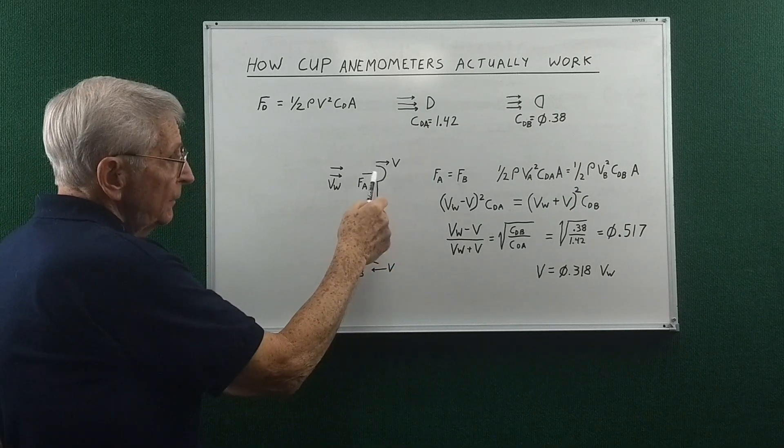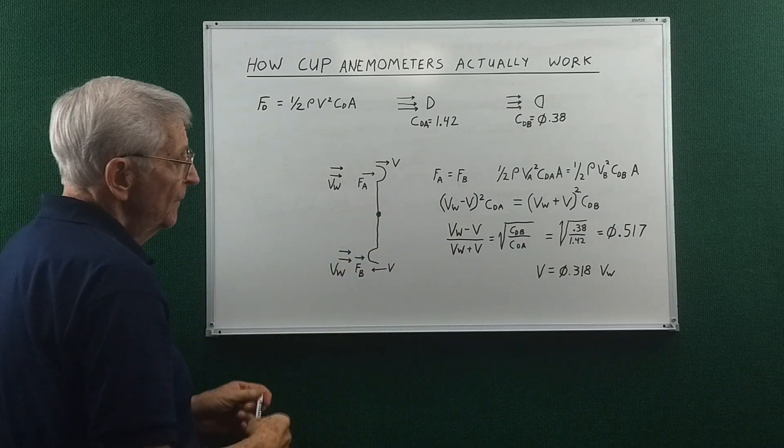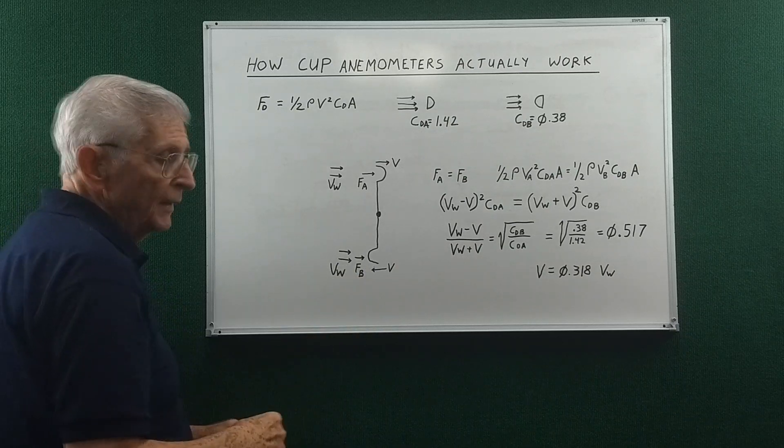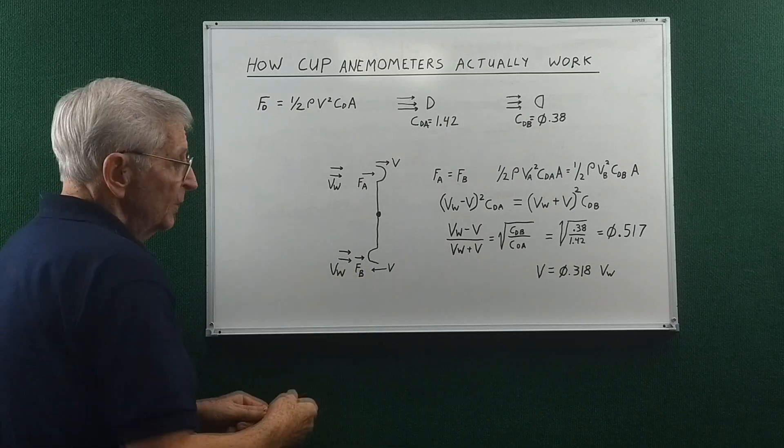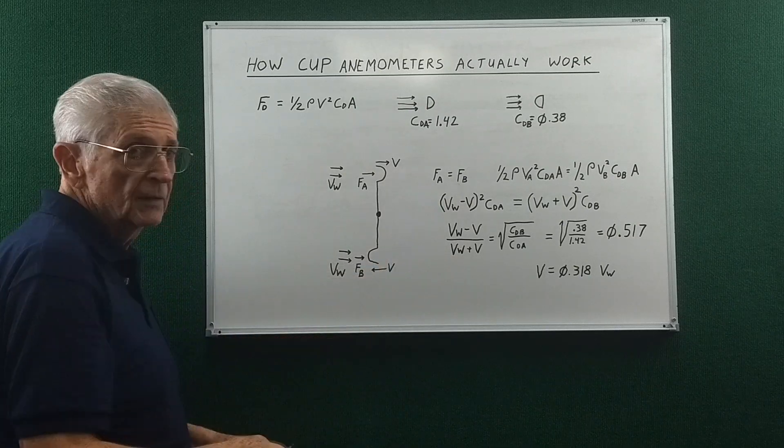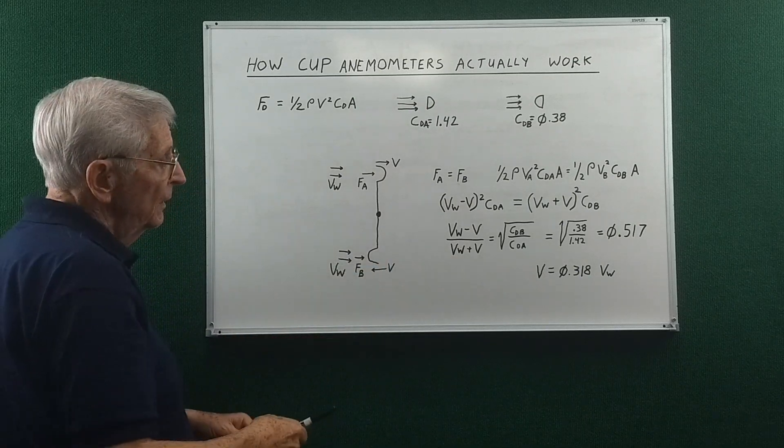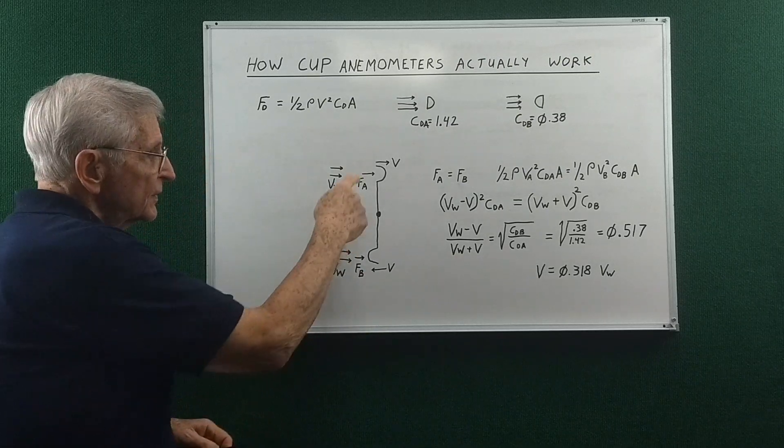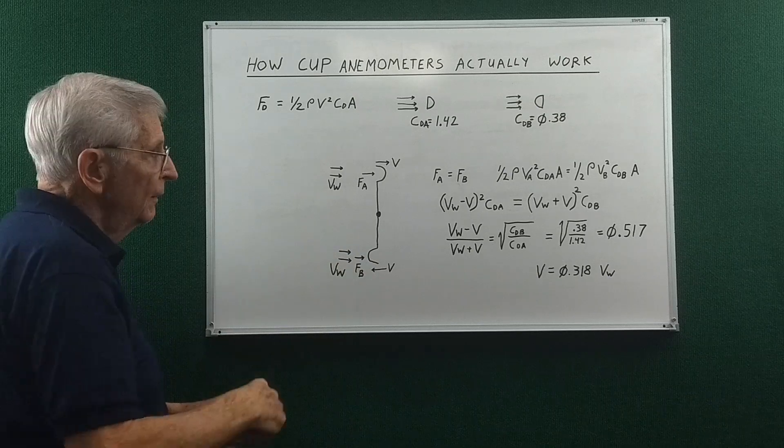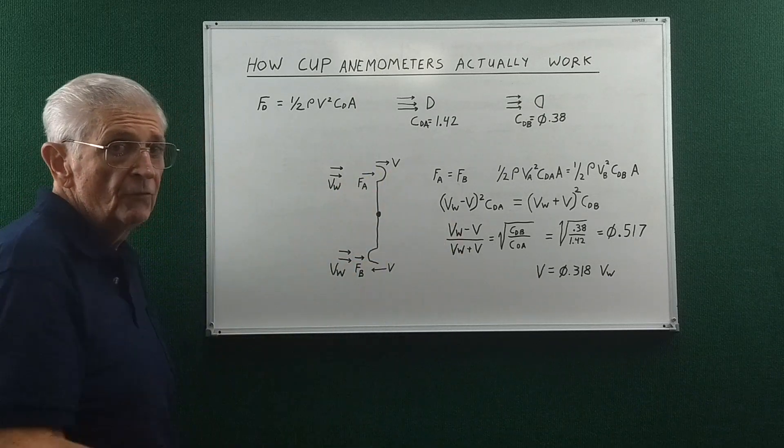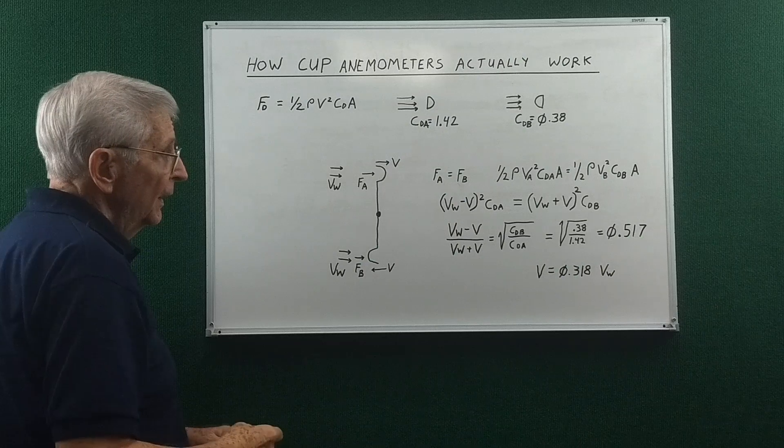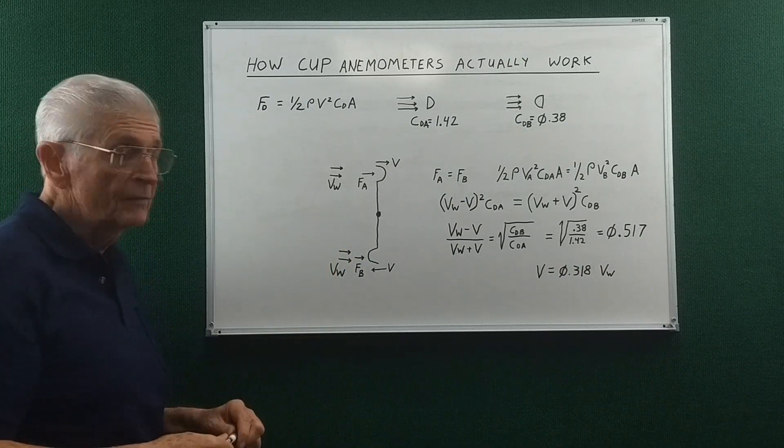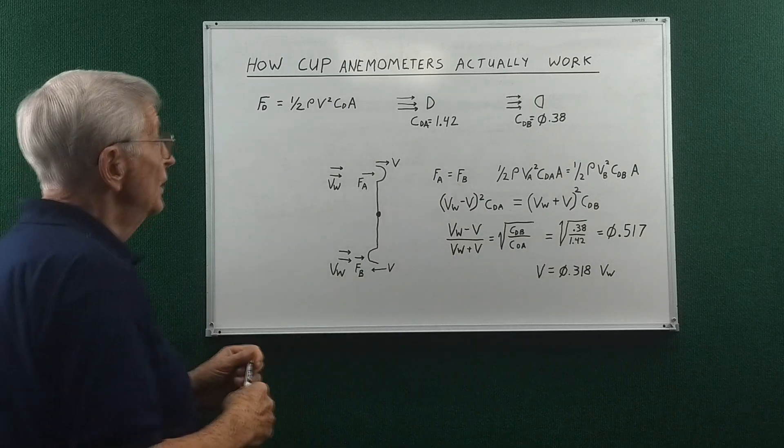So if this cup is moving at the speed of the wind, the relative velocity between this cup and the wind is twice as high, because that cup is moving at the same speed as the wind. So if you understand that, you realize that this cannot turn where this cup is moving at the speed of the wind.